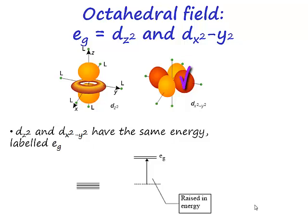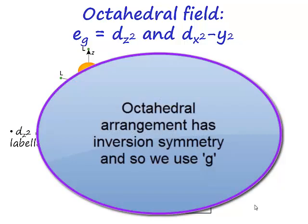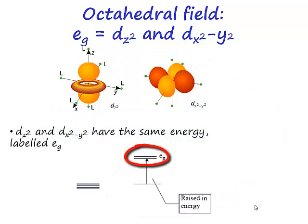If we take a ligand here and invert it through the center, you find a ligand in the opposite position. So an octahedral arrangement of ligands has inversion symmetry, and so we can use the label g. So these are known as the eg set, and it's dx squared minus y squared and dz squared.